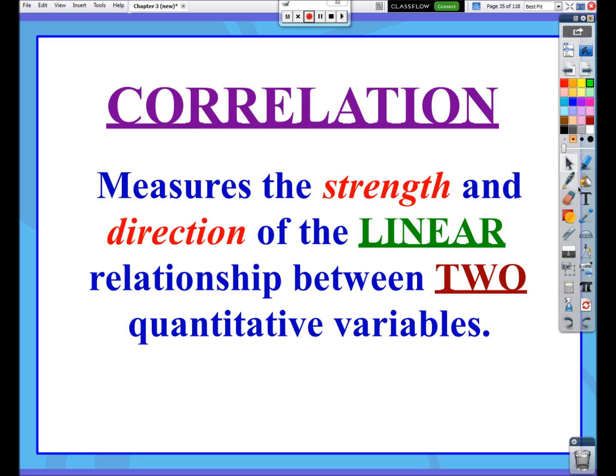The direction is just going to be basically a byproduct. The strength is the main thing we're going to get out of this correlation number. But if the correlation is positive, then the direction's positive. If the correlation is negative, then the direction's negative. So we also get the sense of direction just by the sign.